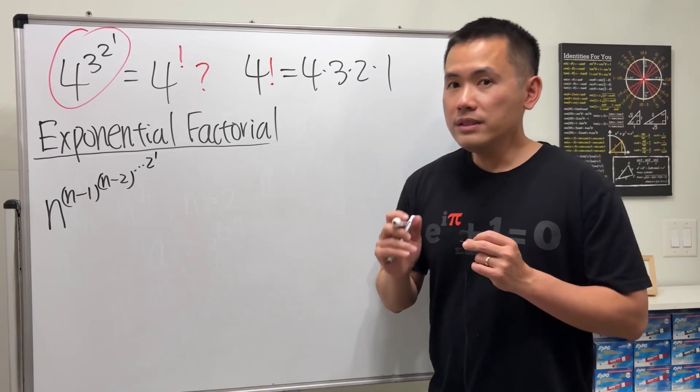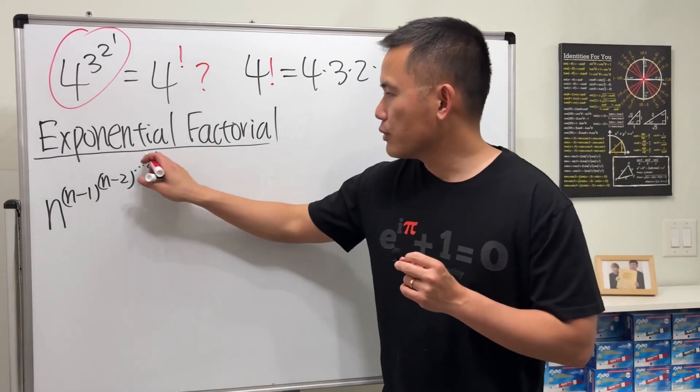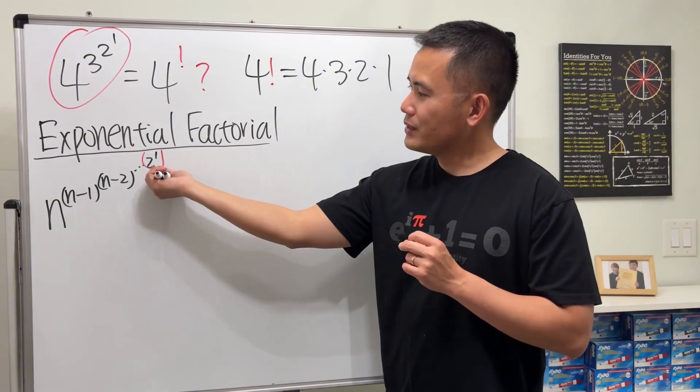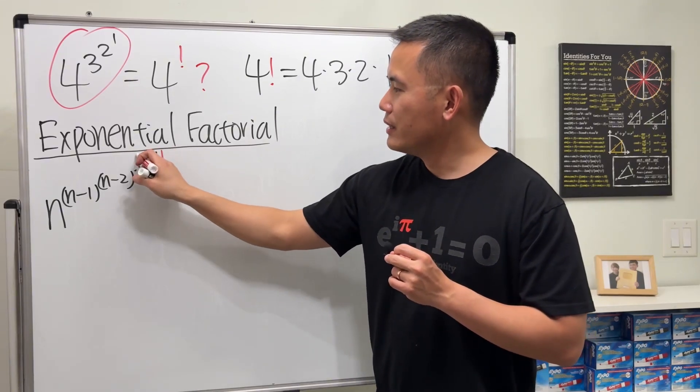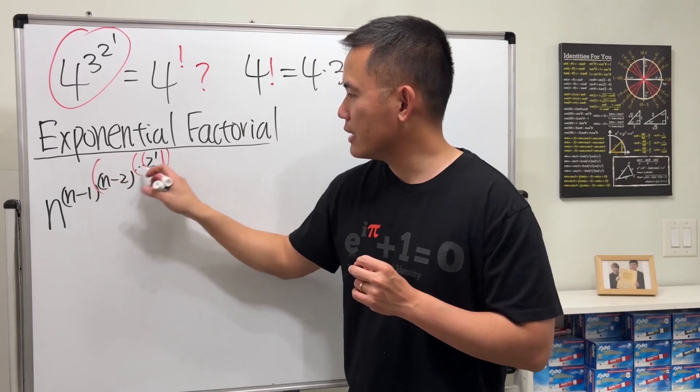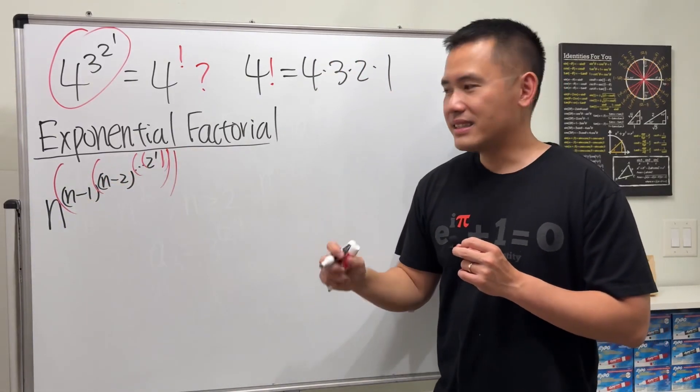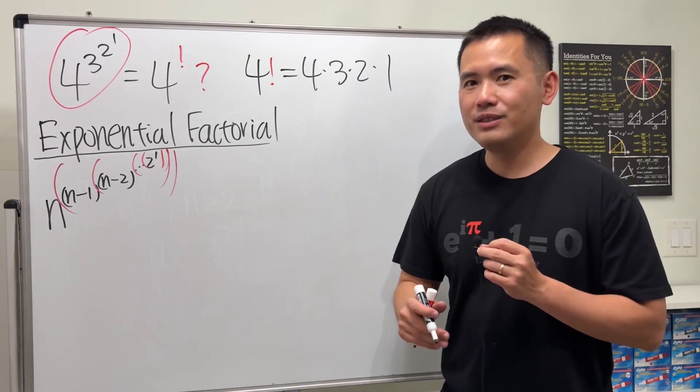One thing you have to make sure though, you have to do the power like this. The top two numbers like this first, and then next, and so on, and then this and then this. It's pretty much inside out. Sometimes this might not be too clear.